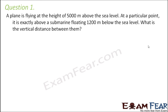Question number 1. A plane is flying at the height of 5000m above the sea level. At a particular point it is exactly above a submarine floating 1200m below the sea level. What is the vertical distance between them?